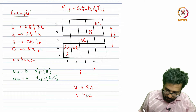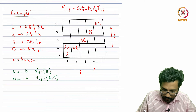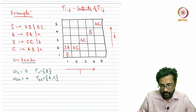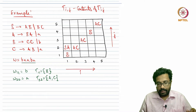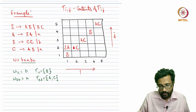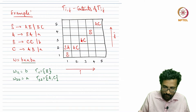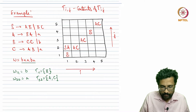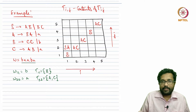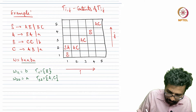Now let us move to cell T[2,3]. We check the combination of T[2,2] and T[3,3]. There are four combinations: A,A — none; A,C — none; C,A — none; C,C is derived by B. So we fill B in T[2,3]. Next is T[3,4]: we check T[3,3] and T[4,4]. A,B is derived by S as well as C. C,B is not derived by anyone. So T[3,4] gets S and C.